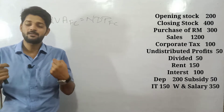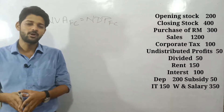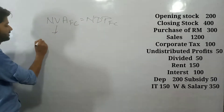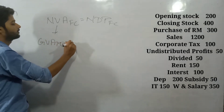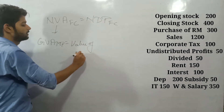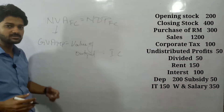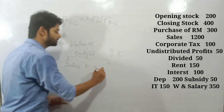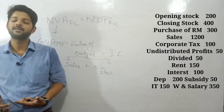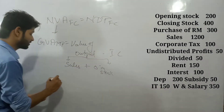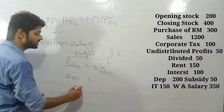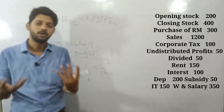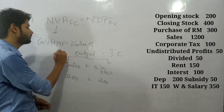The formula is: gross value added at market price equals value of output minus intermediate consumption. Value of output is reclassified into two parts: sales plus change in stock. Sales value in the question is 1200. Change in stock equals closing stock minus opening stock: 400 minus 200 equals 200. So 1200 plus 200 gives value of output as 1400.